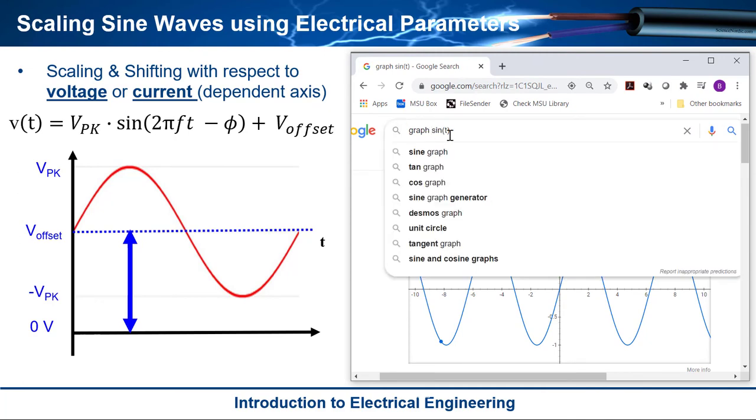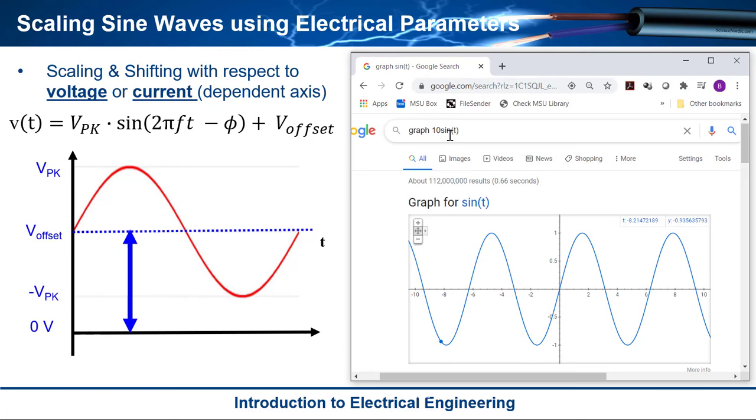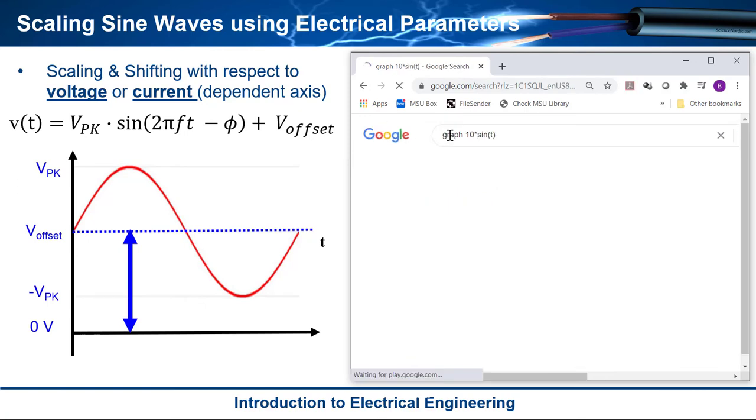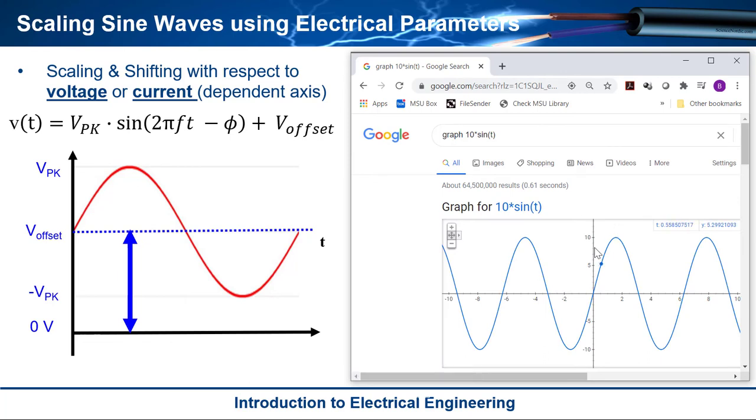So if I came out here and I said let's do 10 times that. Boom. Now take a look at it and lo and behold now it goes up to positive 10 down to negative 10. Pretty easy. Okay now let's shift it by a 5 volt offset.